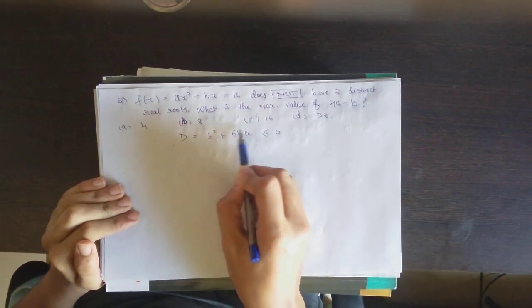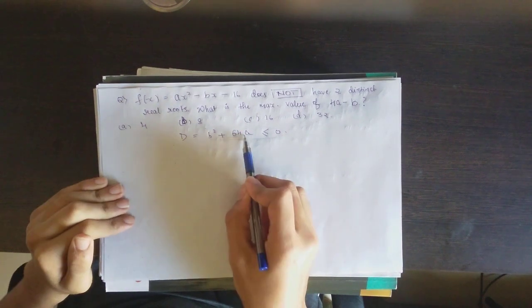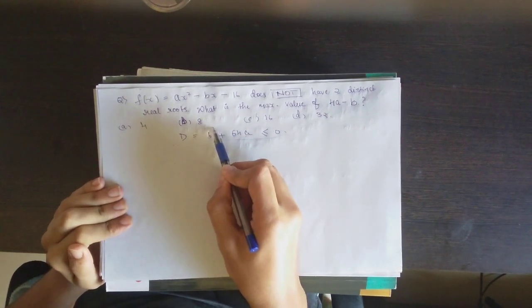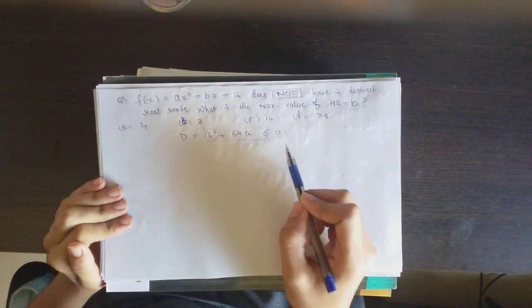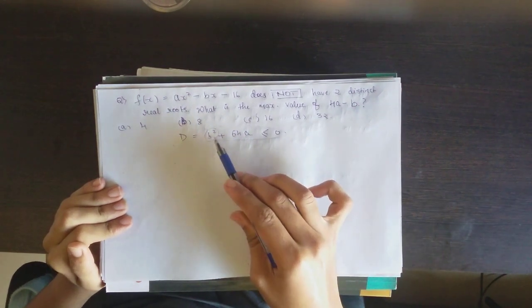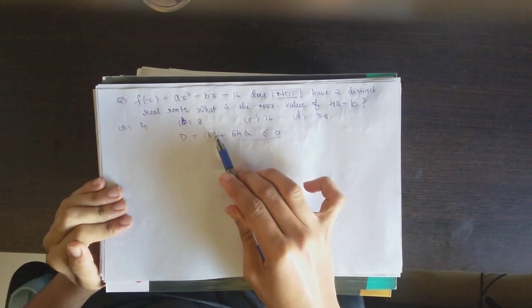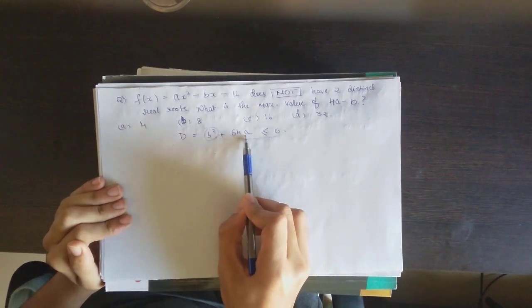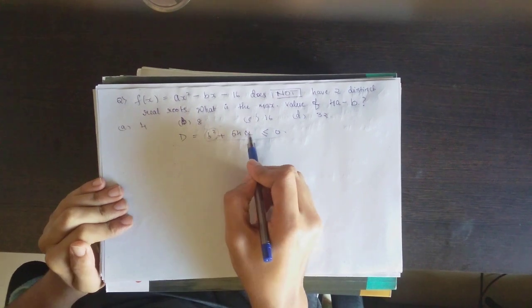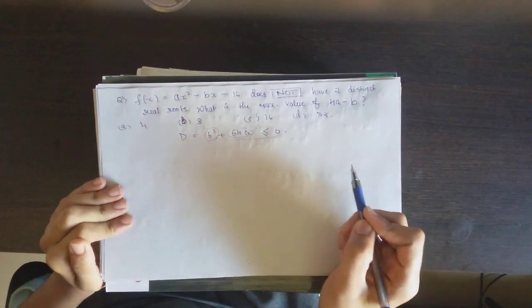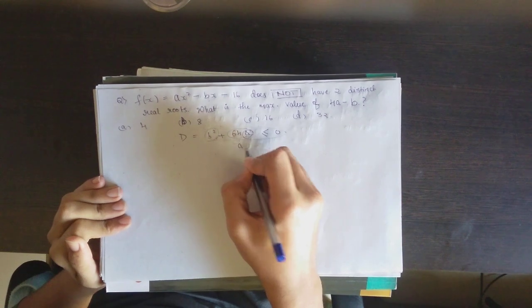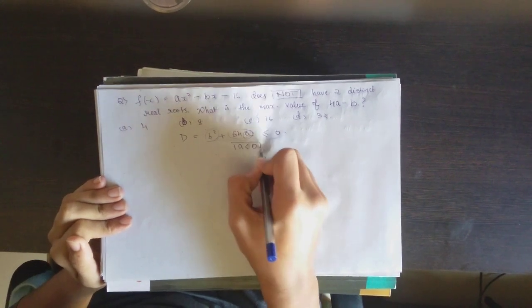So let's understand the meaning behind this equation. We know that b squared is never less than 0 — it is always either 0 or greater than 0 because there is a square. So if this whole equation must be less than or equal to 0, it must be true that 64a is also less than 0, so a has to be less than 0.